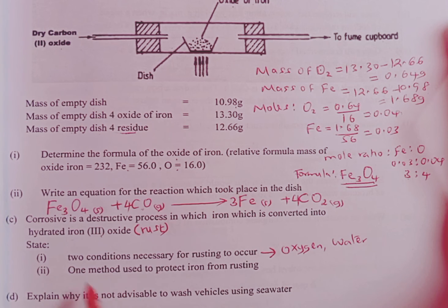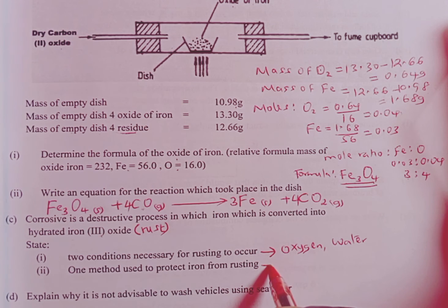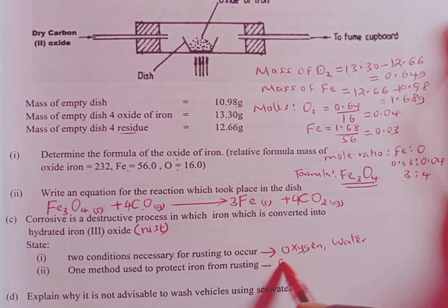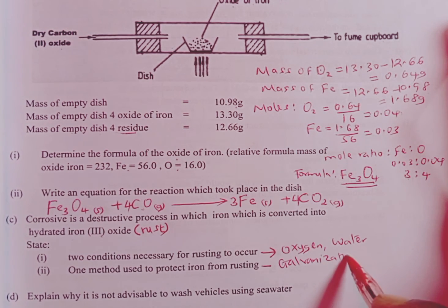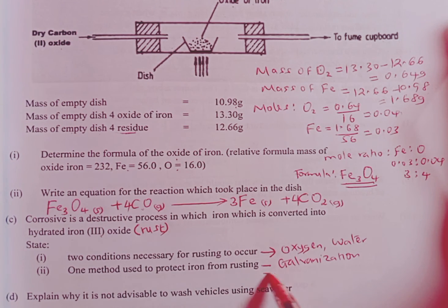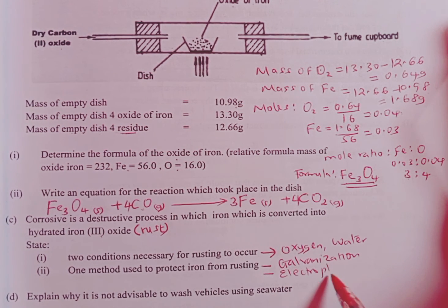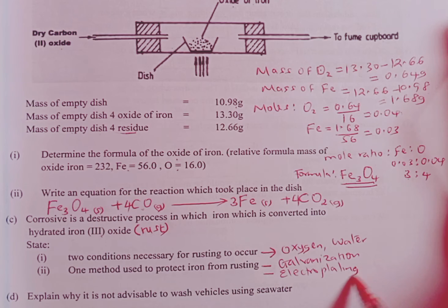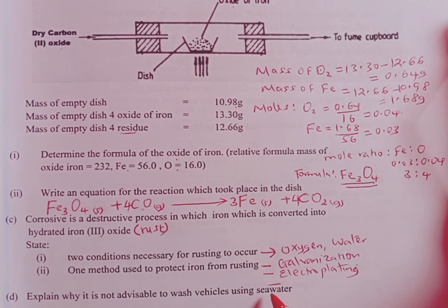Next we have one method used to protect iron from rusting. We are looking at the methods that we use to control rusting. One, we can use galvanization. We can use electroplating. Apart from electroplating, we can also use painting.